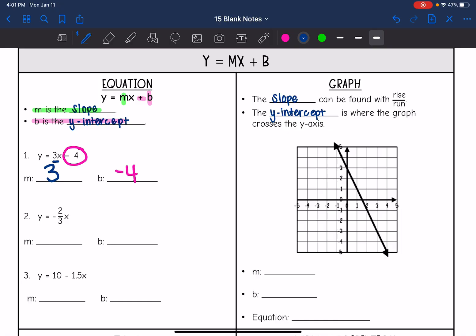On number 2, I have y equals negative 2 thirds x. That makes the slope negative 2 thirds since that's the coefficient of x, and then our y intercept is 0 since we're not adding or subtracting anything.